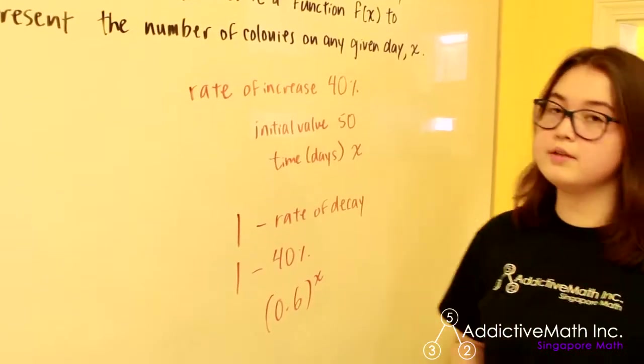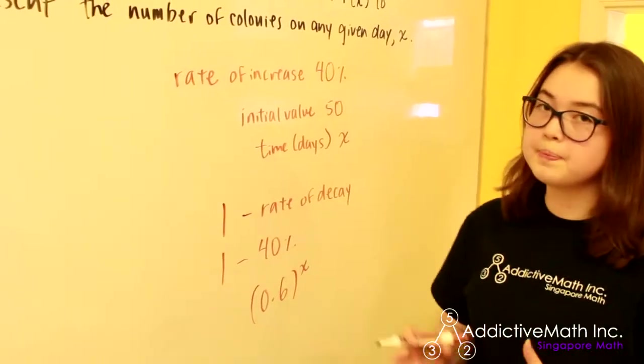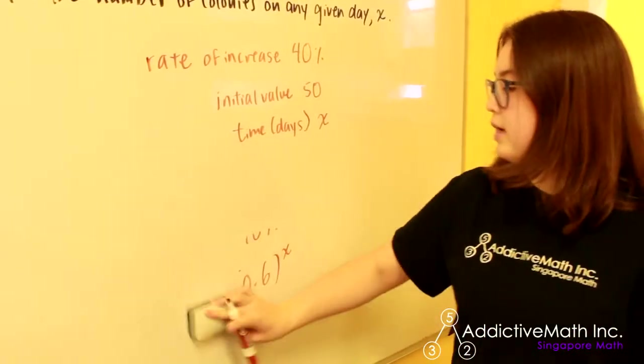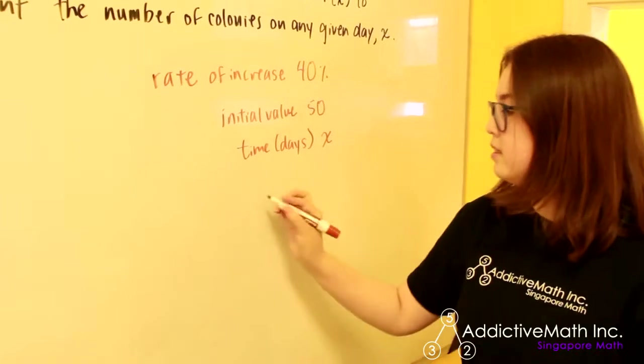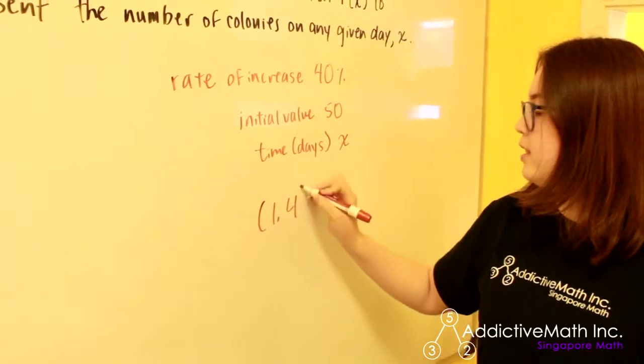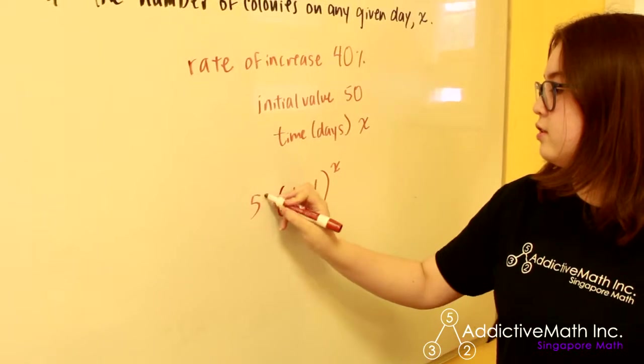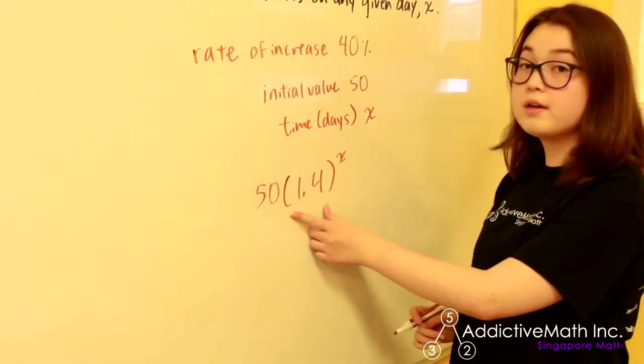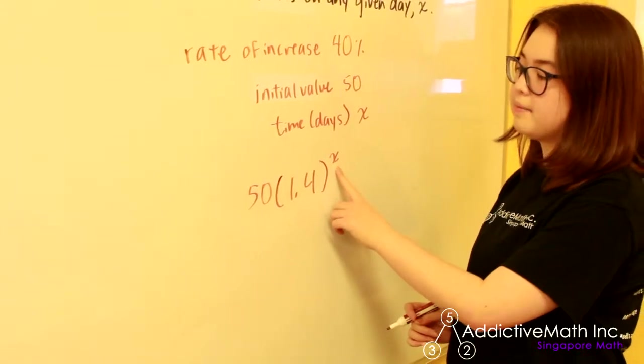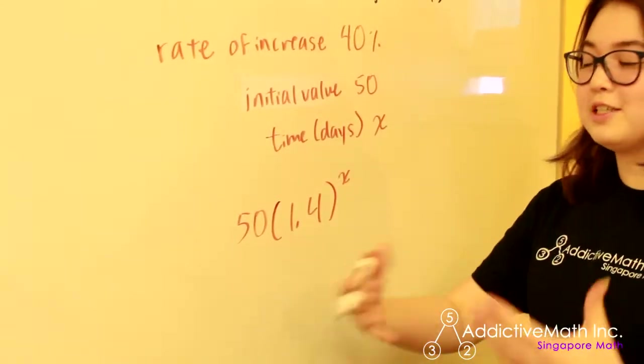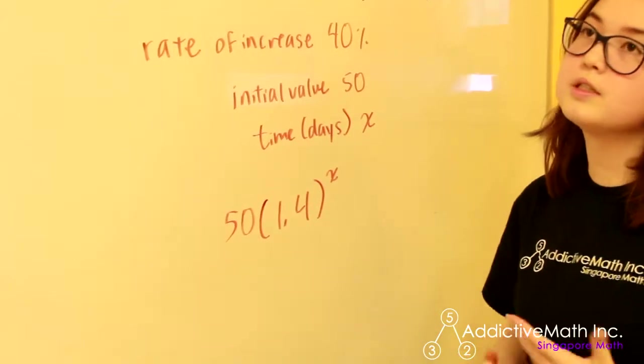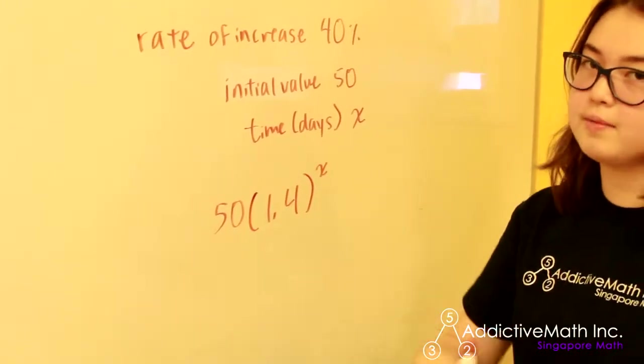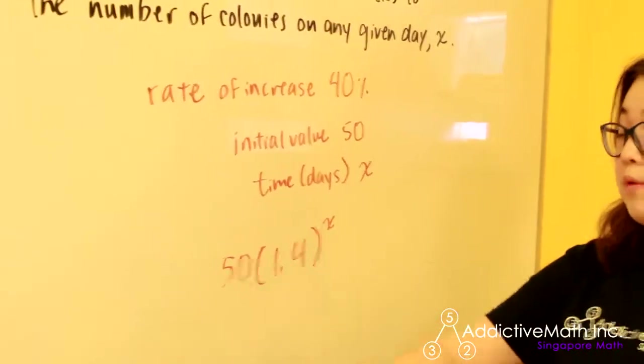Now, the reason that we use this connection involving 1 is because of how exponential functions work. Recall that our exponential function is our rate 1.4 to the x power with our initial value out here. When we take a number that is greater than 1 and multiply it by itself x times, our function is growing. For example, consider the number 2. When we take 2 and we multiply it by itself repeatedly, we get 4 and then we get 8 and so we are growing.